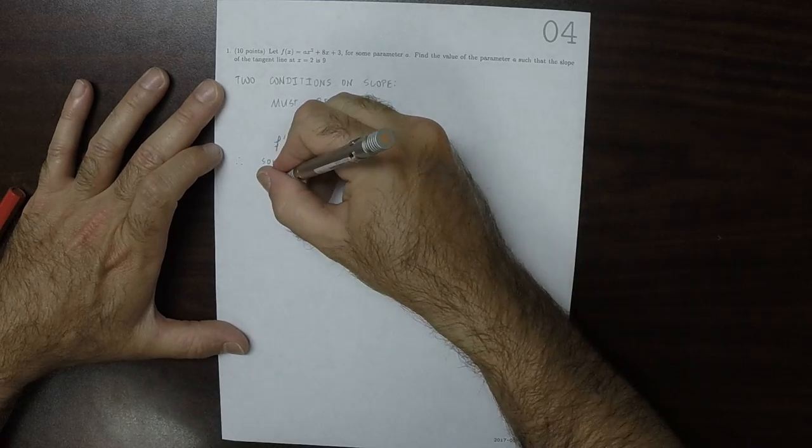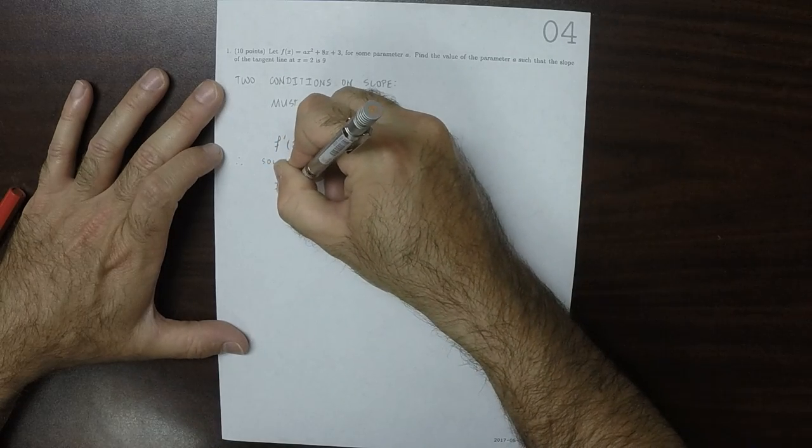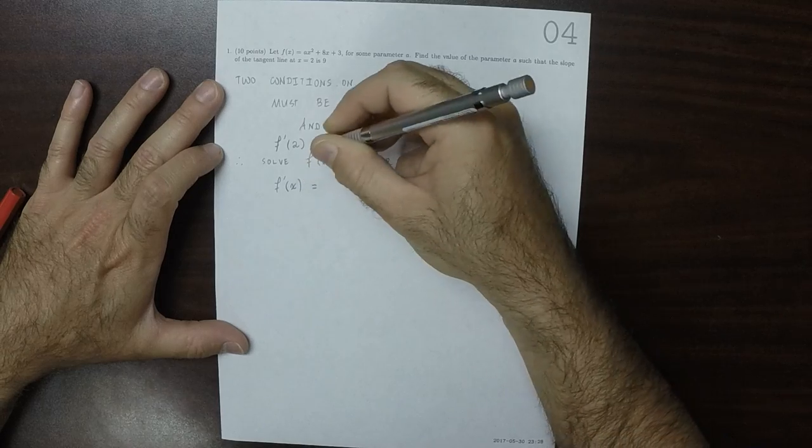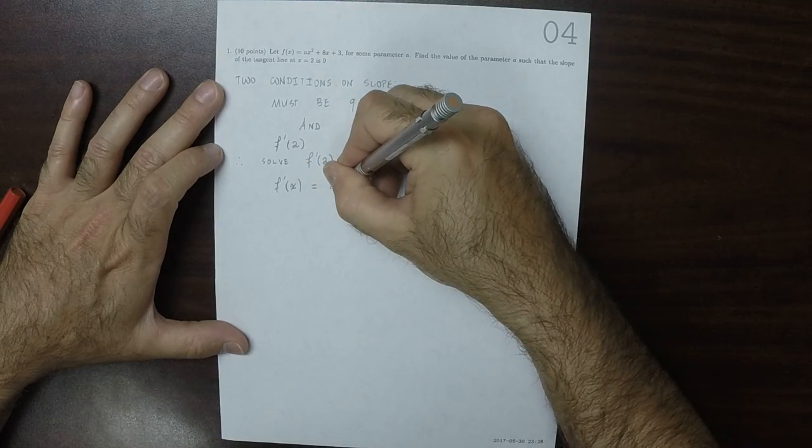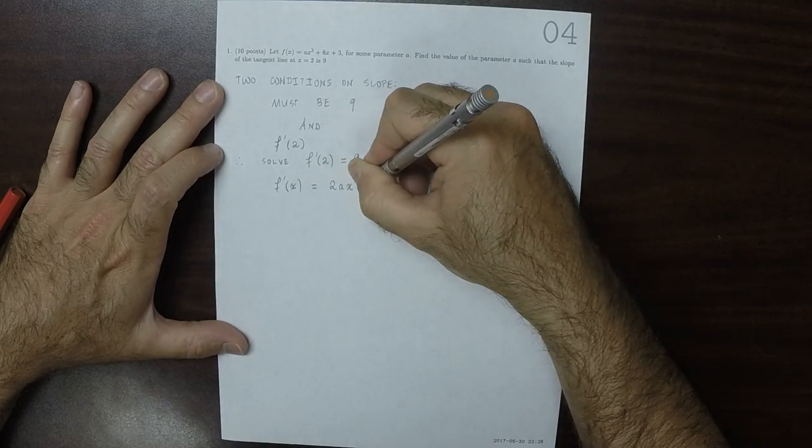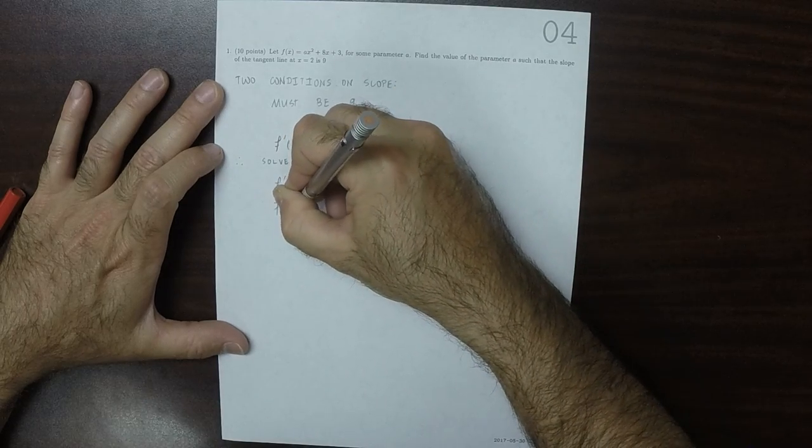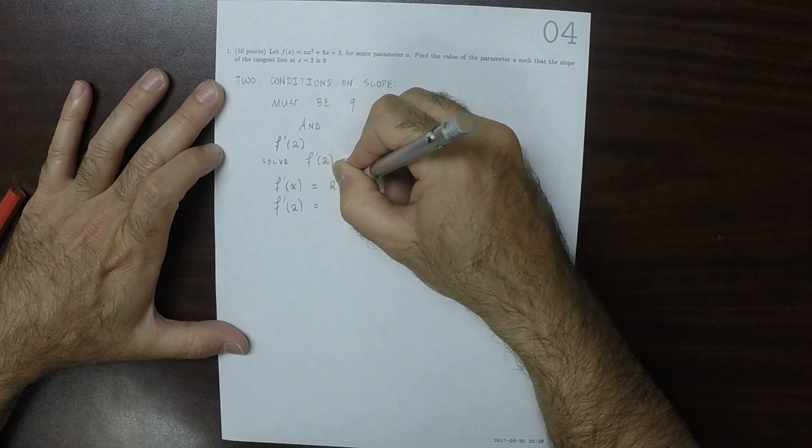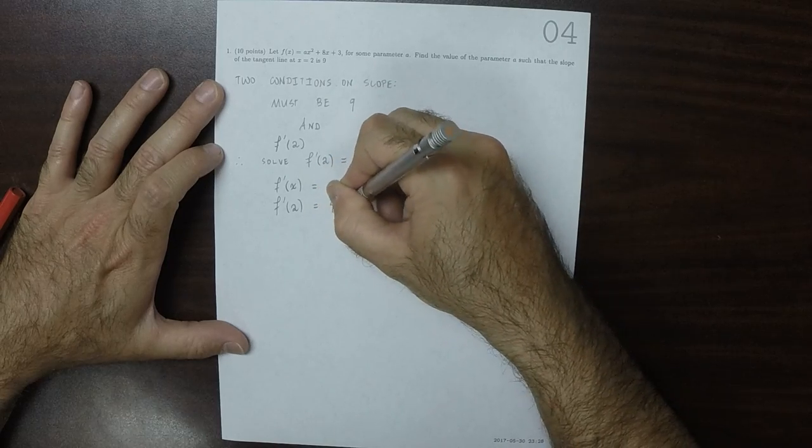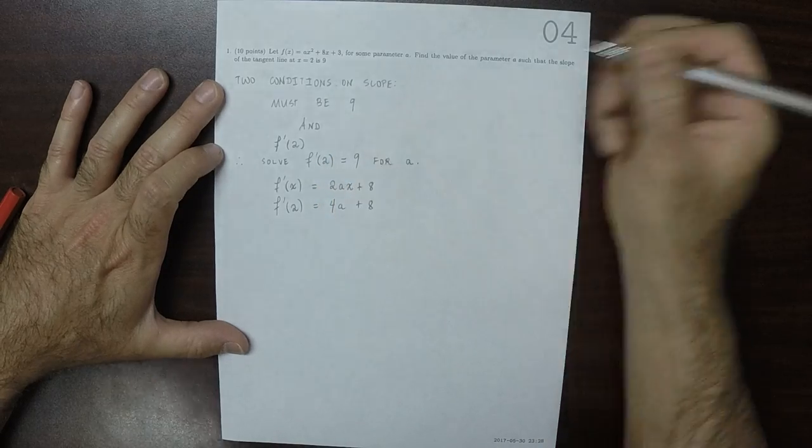The derivative of f evaluated at x is 2Ax plus 8. Plugging in x equals 2, that's 2 times a times 2, so that's 4A plus 8.